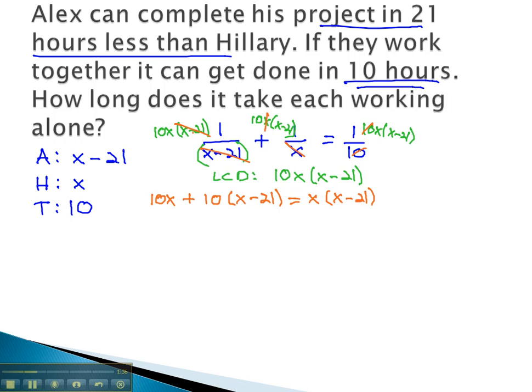We can now continue solving by distributing the 10 through and the x to get 10x plus 10x minus 210 equals x squared minus 21x. Combining like terms gives 20x minus 210 equals x squared minus 21x.